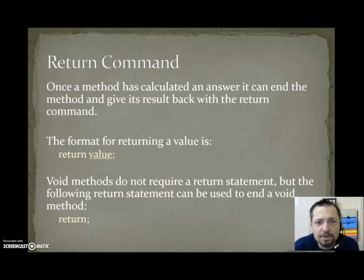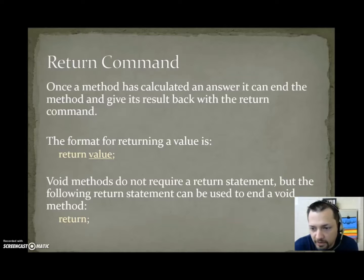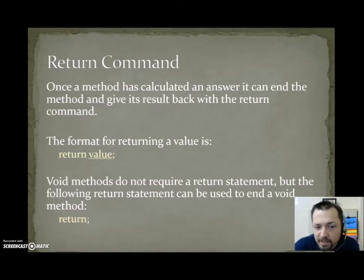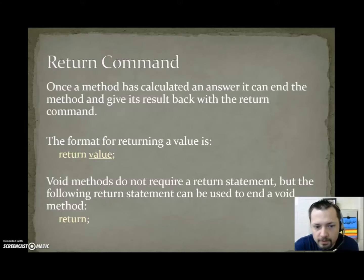Return command. Once a method has calculated an answer, it can end the method and give the result back with the return command. The format for returning a value is: return value — you send back whatever data you've calculated. Void methods do not require a return statement; they start at the beginning and go to the end, then stop. But the following return statement can be used to end a void method: if you're halfway down a method and want to stop, you can do return semicolon and that will kill the method. We won't be using this until we get to selection statements — just know that a void method can be ended with return semicolon.